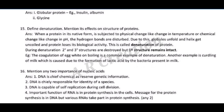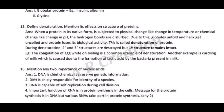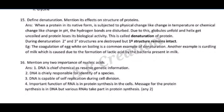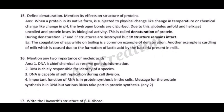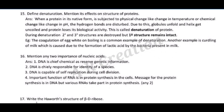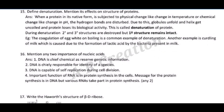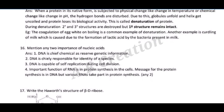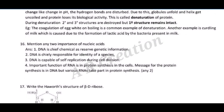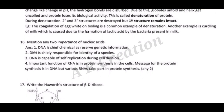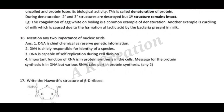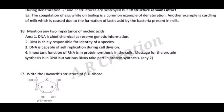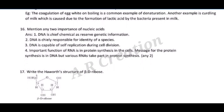Due to this disturbance, globules unfold and the helix gets uncoiled, and the protein loses its biological activity. This is called denaturation of protein. During denaturation, the secondary and tertiary structures are destroyed, but the primary structure remains intact. Example: coagulation of egg white on boiling is a common example of denaturation. Another example is curdling of milk, caused by the formation of lactic acid by bacteria present in milk.